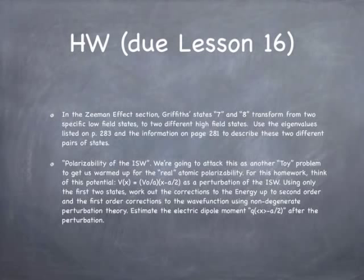The first is there's a new homework assignment. What I thought I'd have you guys do is to look at the Zeeman effect and notice that Griffith's states 7 and 8, the one he calls Psi 7 and Psi 8, go from two specific low-field states to two different high-field states. What I want you to do is to look at the eigenvalues listed on page 283 as a function of beta and the information from page 281 that describes what states 7 and 8 actually are and how they're defined in the J basis. And I'd like you to identify what are the low-field states, what do they correspond to, definite values of what observables. And then in the high-field limit, what do these two particular states correspond to in terms of their quantum numbers and their observable values. So that's the idea.